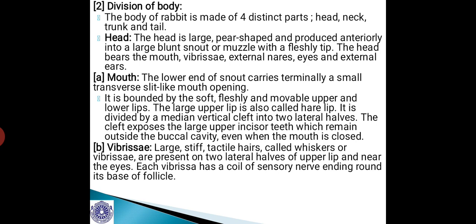The lower end of the snout carries terminally a small transverse slit-like mouth opening. It is bounded by soft, fleshy, and movable upper and lower lips. The large upper lip is also called the hair lip and is divided by a median vertical cleft into two lateral halves. This cleft exposes the large upper incisor teeth which remain outside the buccal cavity even when the mouth is closed. Vibrissae are large, stiff, tactile hairs called whiskers, present on two lateral halves of the upper lip and near the eyes. Each vibrissa has a coil of sensory nerve endings around the base of the follicle.